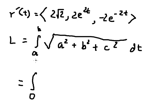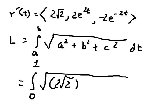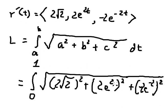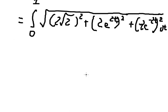b equals one, and we put this value in here, this value in here, and this value in here. Oh sorry, that's t not s. After we put the values in, we can calculate this integral.